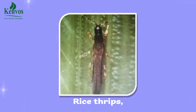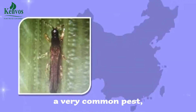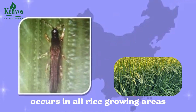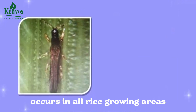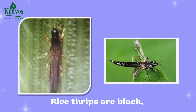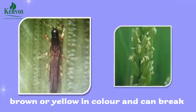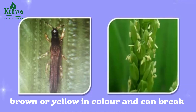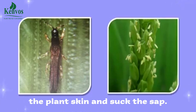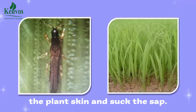Rice thrips, a very common pest, occurs in all rice growing areas. Rice thrips are black, brown, or yellow in color, and can break the plant's skin and suck the sap.